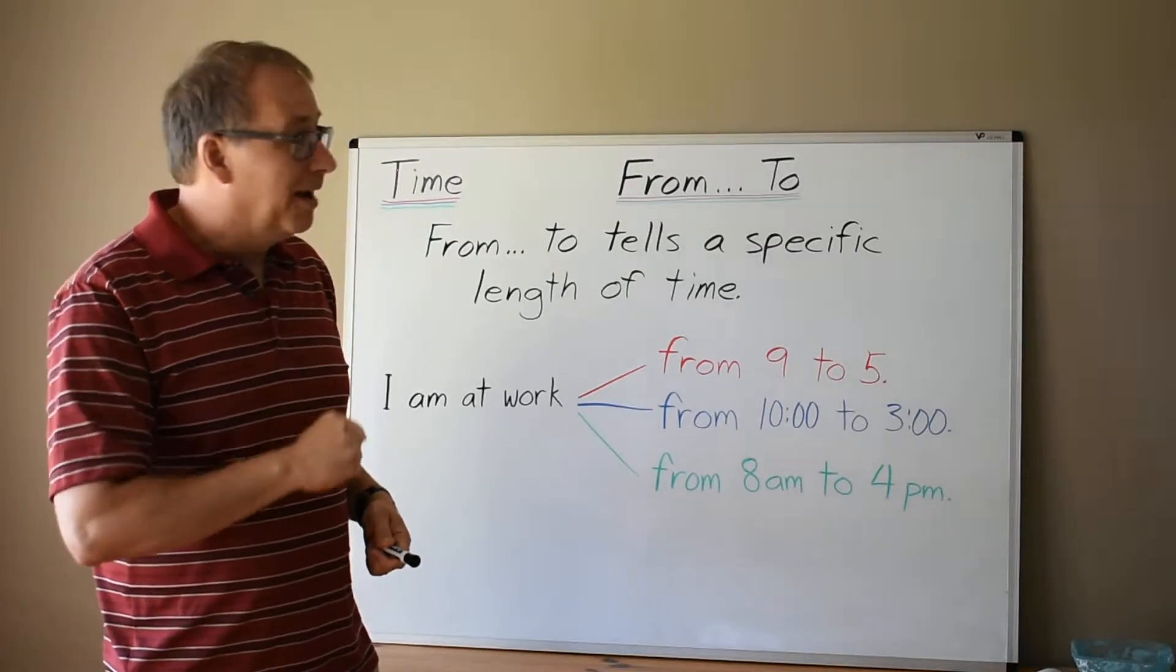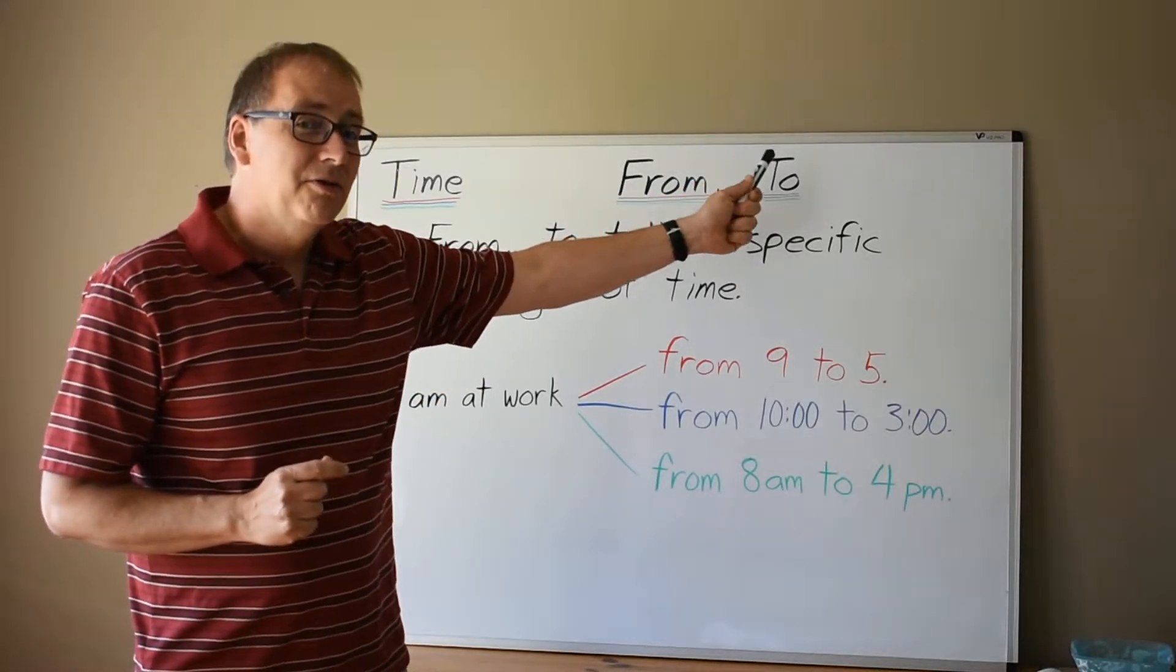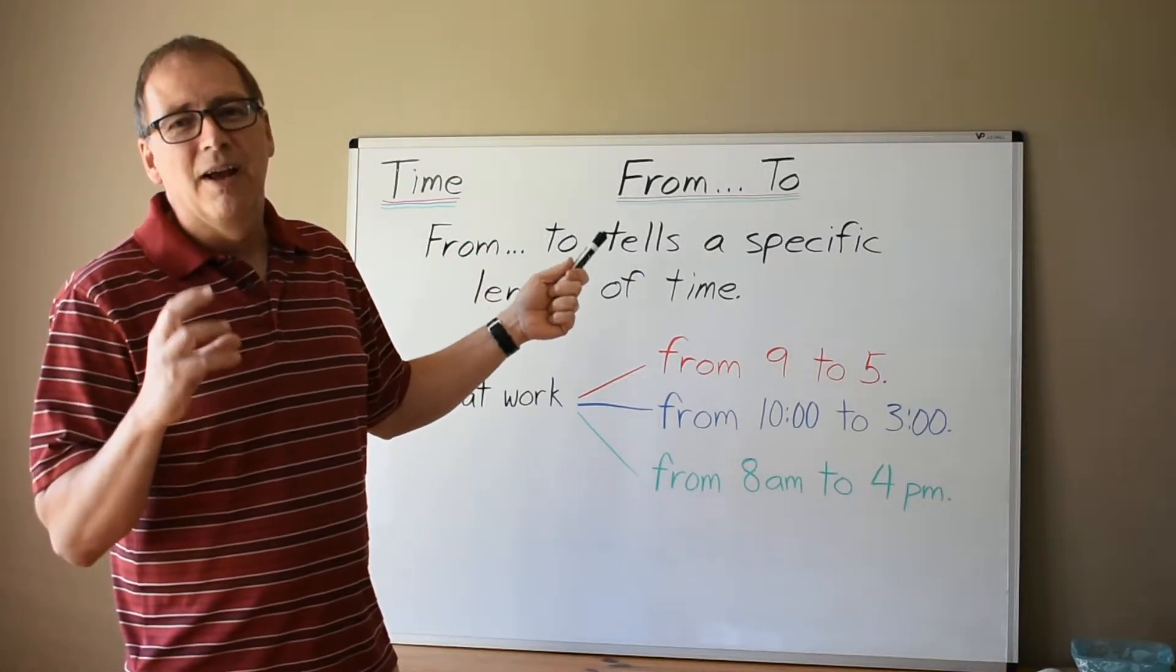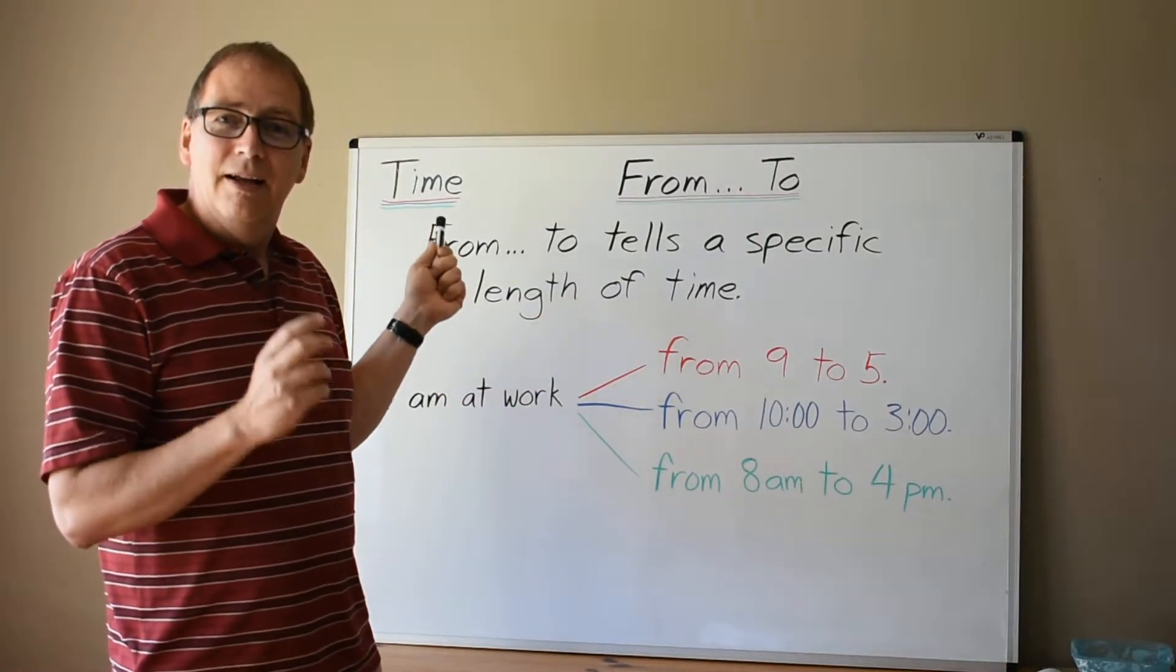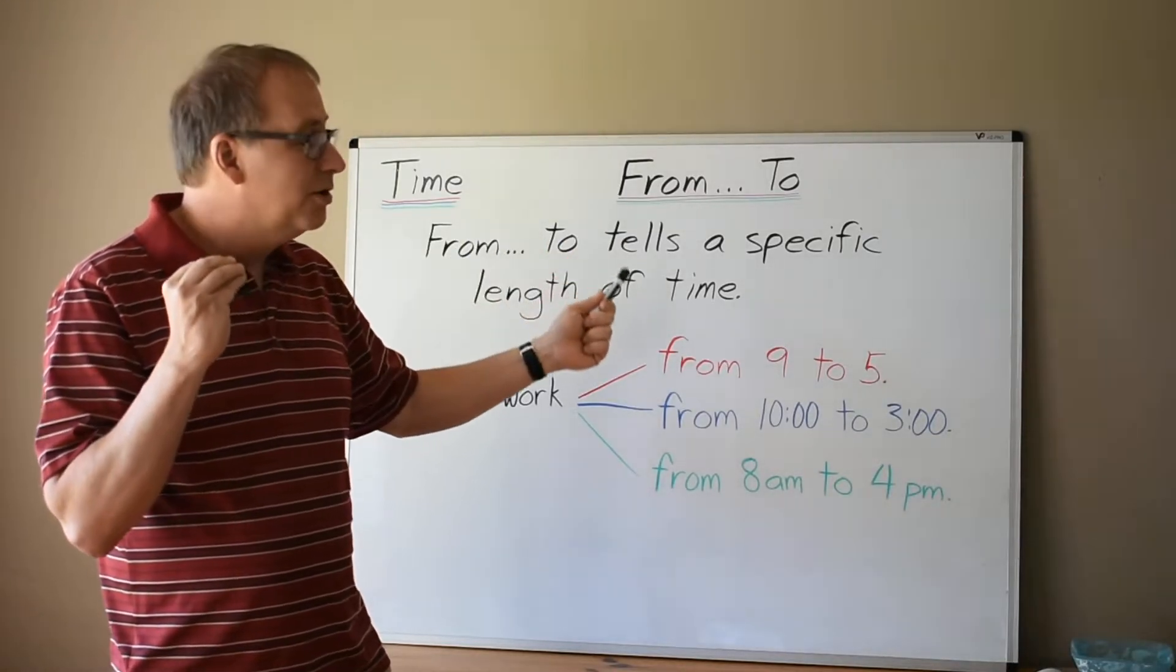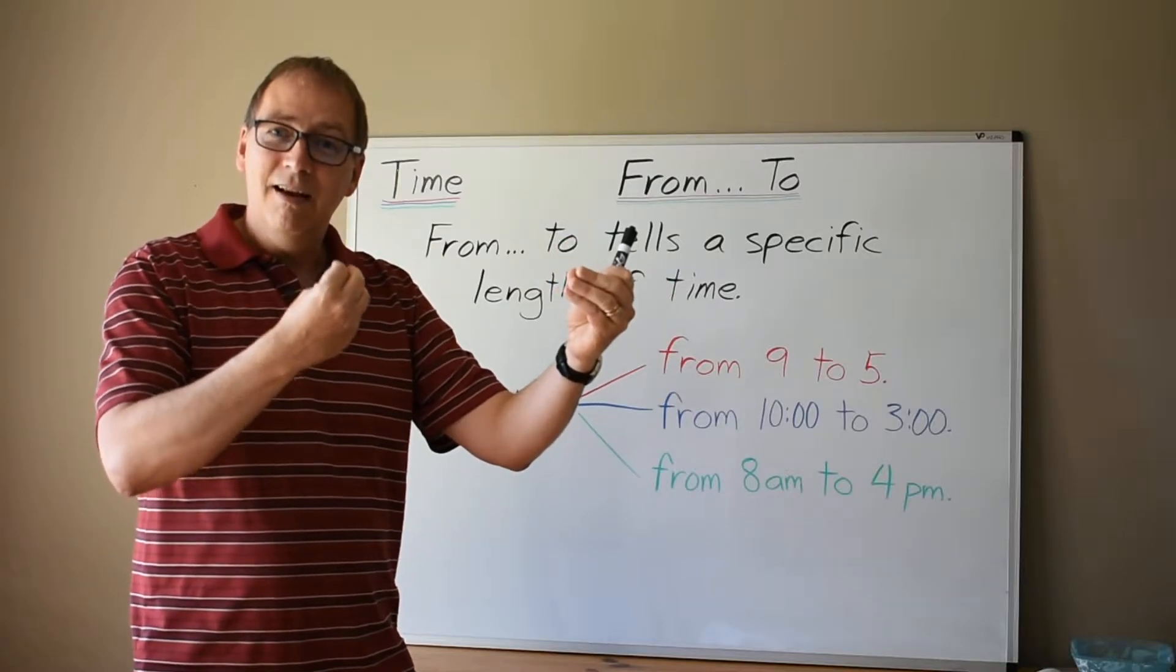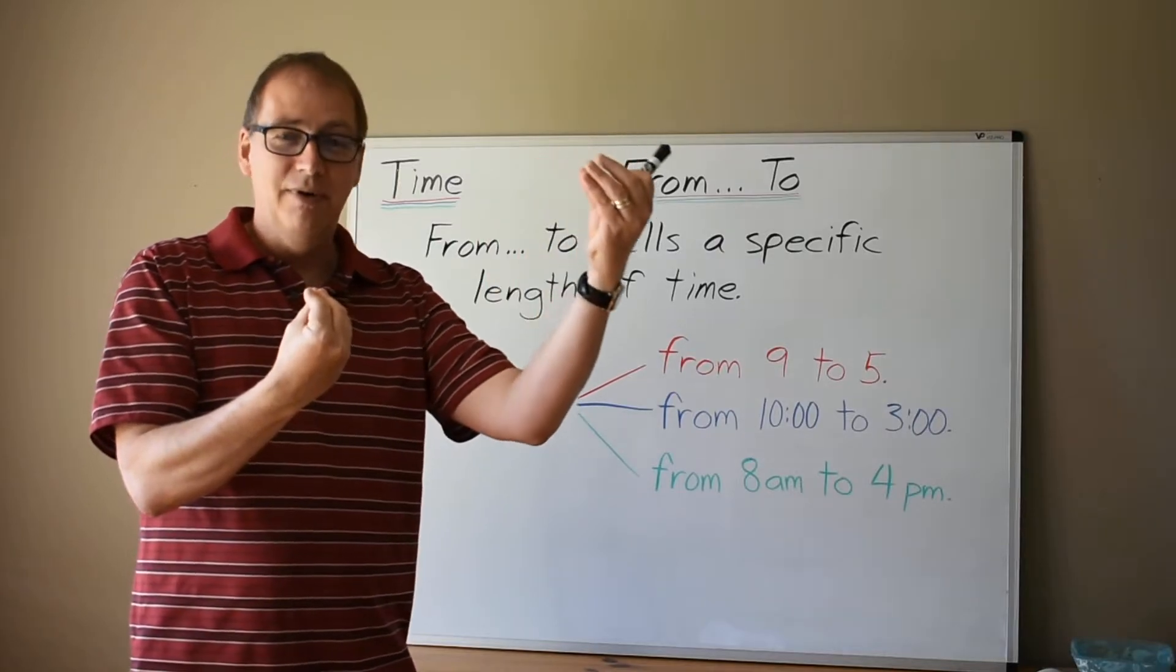This time we are using these two words, from and to. From and to tell about a specific length of time. From mentions the beginning of the length of time and to talks about the end of the time. So the time we mention is between when we say from and when we say to.